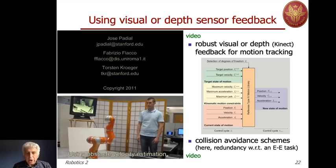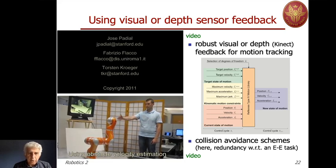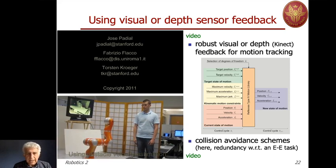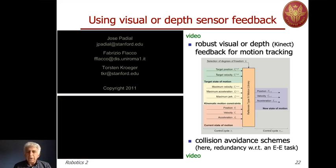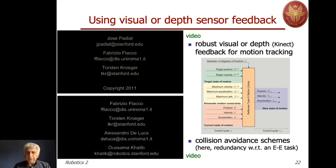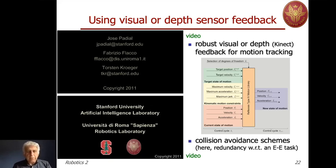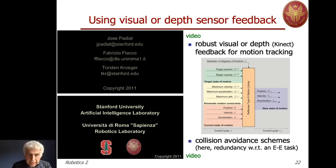You can also avoid obstacles by estimating the intention of motion — the direction of the estimated velocity while the human is moving his hand. So depending on how you approach, there will be a different type of reaction. This was a preliminary experiment made in 2011, and the collaboration continued until 2017, where we developed other methods, including the SNS — Saturation in the Null Space — method presented before.